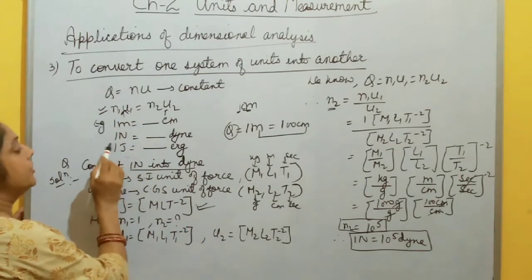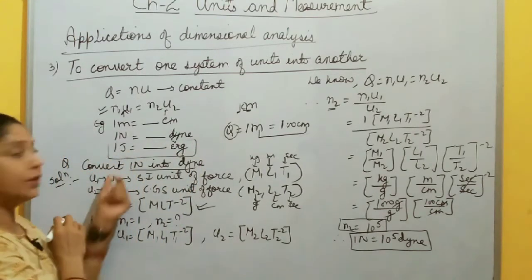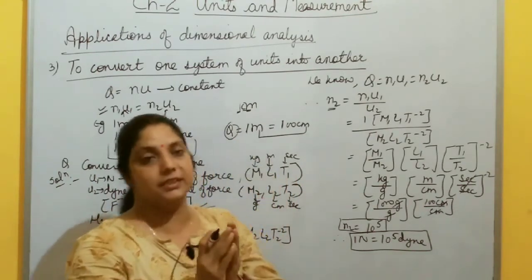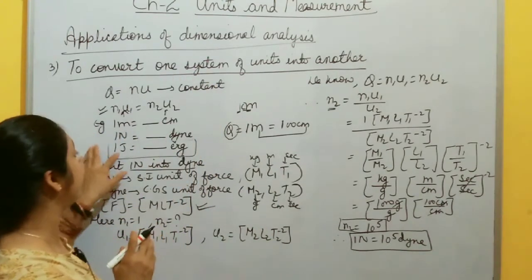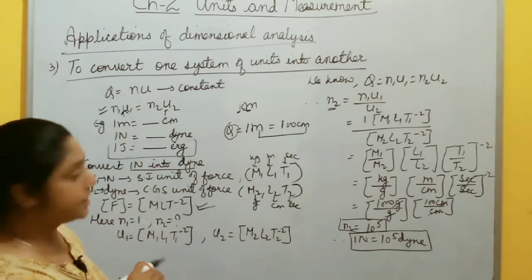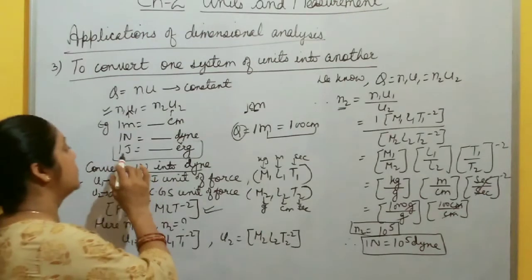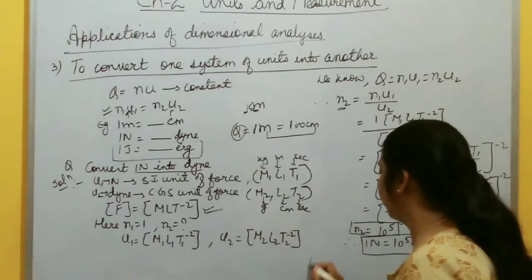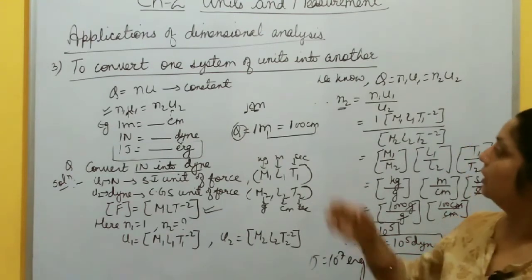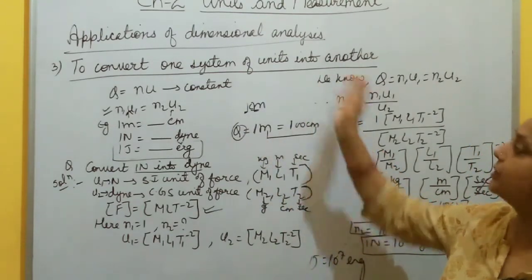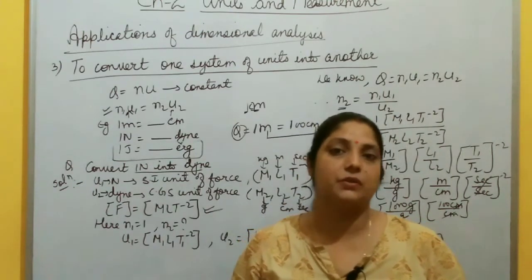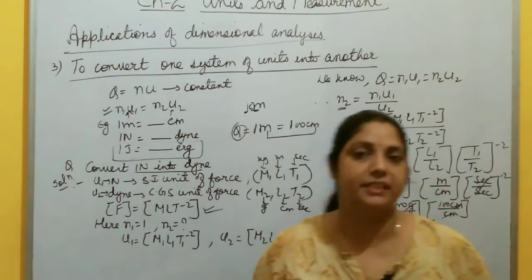In the same way, you can convert 1 joule into how many erg. Joule is the SI unit of energy and erg is the CGS unit of energy. Try to solve it yourself and write the answer in the chat box. The answer is 1 joule = 10⁷ erg. Hope you understood all these topics. Keep revising and stay tuned with this channel. Thank you.